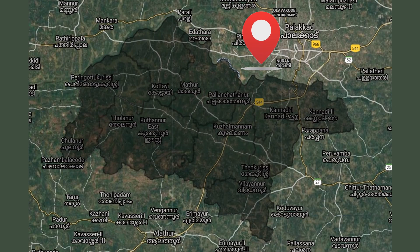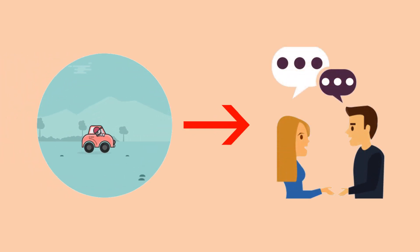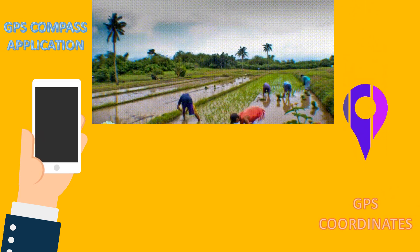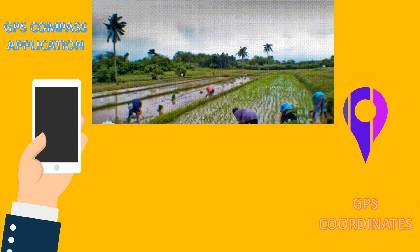Kurelmanum block panchayat of Palakkad district was adopted as the study area. We went to the study area, interacted with the farmers to know more about the paddy cultivation, and we collected the GPS coordinates using an application called GPS Compass which was installed in our mobile.